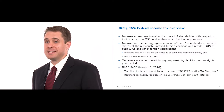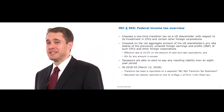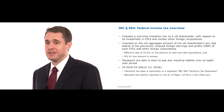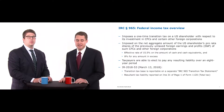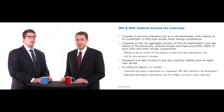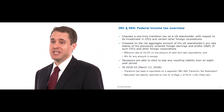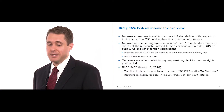Section 965 is the transition tax that imposes a tax on the previously deferred earnings of certain 10% owned foreign subsidiaries. The tax is imposed by increasing the subpart F income of the foreign subsidiaries under Section 965, and the inclusion is generally treated the same as subpart F income.